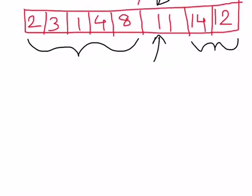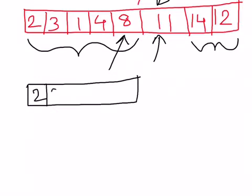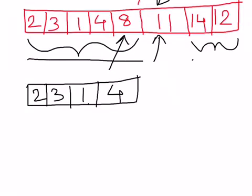Now we choose a pivot element for the left sub-array and do the same thing. If we compare all elements with 8 — the last element of the left sub-array — then elements 2, 3, 1, and 4 are all smaller than 8. So by choosing 8 as the pivot, the left sub-array remains as 2, 3, 1, 4 with 8 placed correctly, and the right side of 8 is empty.